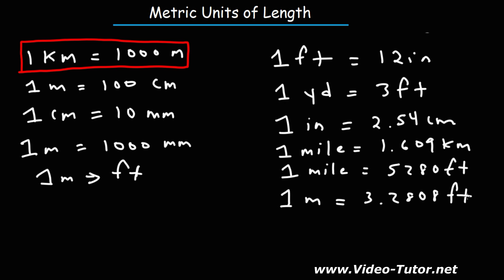Now, if you want to find out how many meters are in a foot, let's divide both sides of this equation by 3.2808. So 1 divided by that number gives us this. So 1 foot is equal to 0.3048 meters.